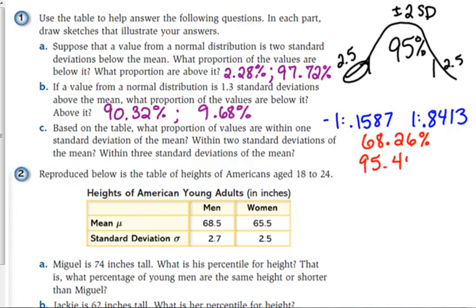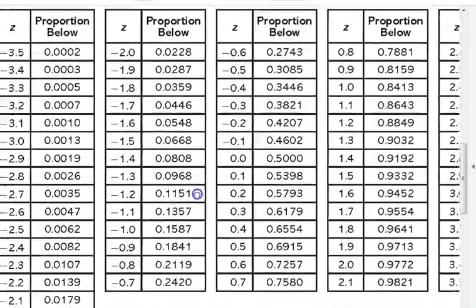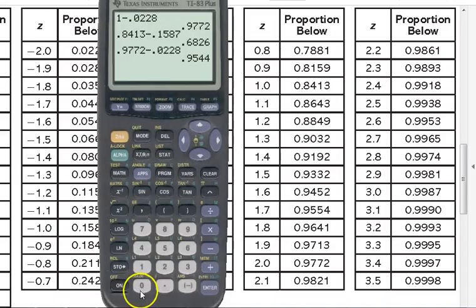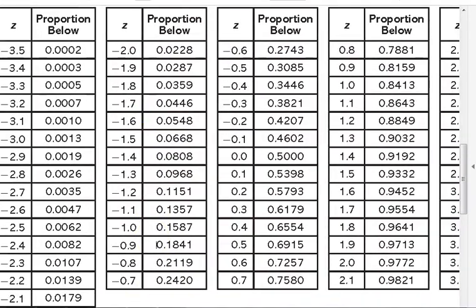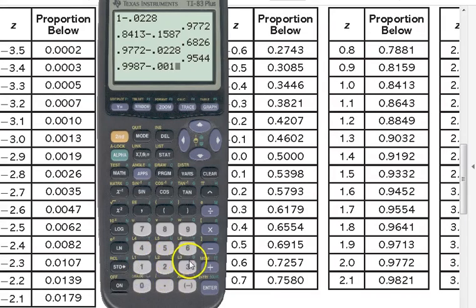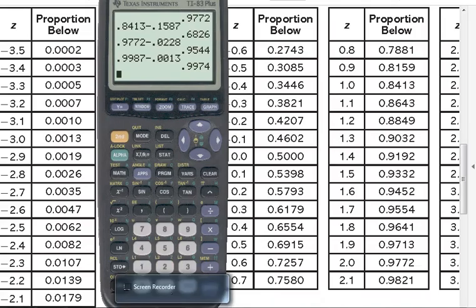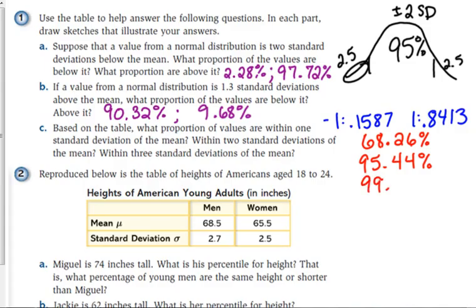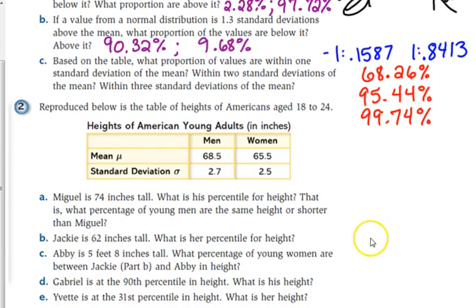Very, very close to our idealized number, and then let's look at three. We've got .0013 for minus three, and .9987 for plus three. 99.74.